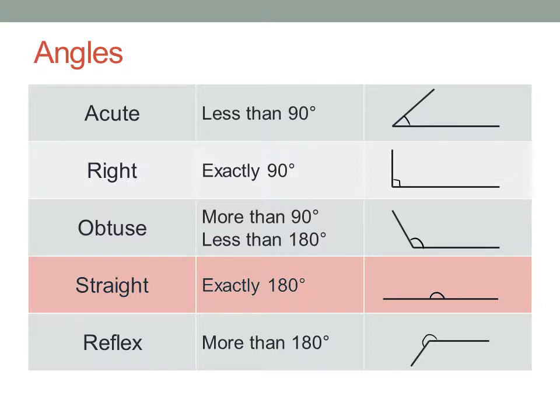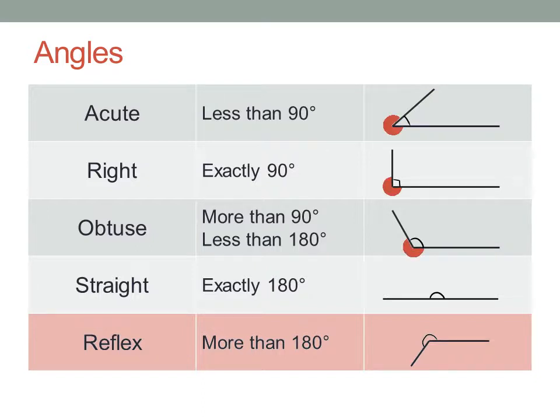This is a straight angle. And if we keep expanding the angle past this, we get a reflex angle. In fact, there's a reflex angle on the other side of our first three angles. Normally, we would use the smaller angle on the inside of the bend, but sometimes we need to talk about the reflex angle on the other side.